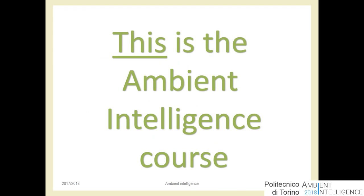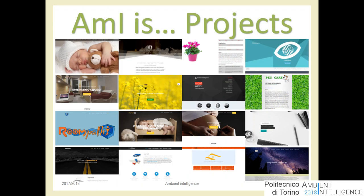Before the official introduction, I want to give you a glimpse of what we do in this course. This set of images and ideas is what we want this course to be. First of all, AMI — Ambient Intelligence — is a project made of a course made of projects. We do projects here. There won't be a lot of theory, mathematics, or other stuff; there will be a lot of projects to develop.